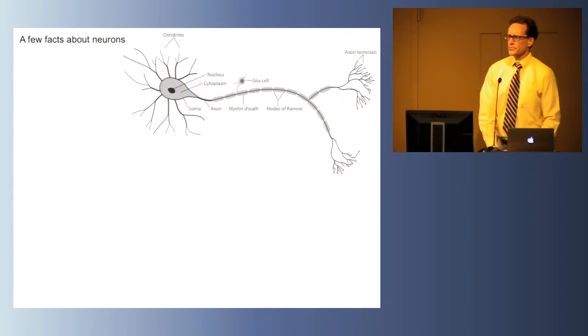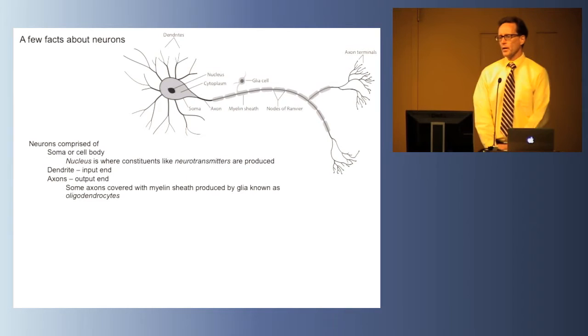Let's review some basic facts about neurons. Neurons are comprised of a soma or cell body. In the cell body is the nucleus where through genetic control various proteins and other elements needed for nerve function are produced. Branching off the cell body are dendrites that receive inputs from other neurons, and the given cell body can have many dendrites coming out of it.